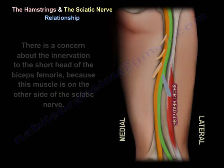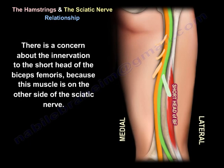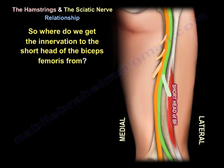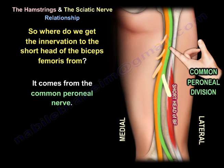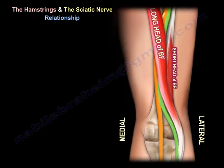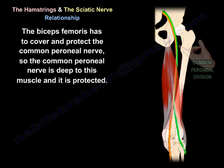There is concern about the innervation of the short head, because this muscle is on the other side of the sciatic nerve. The innervation comes from the common peroneal nerve, not from the tibial nerve, since the tibial nerve cannot reach there. The biceps femoris has to cover and protect the common peroneal nerve, which is deep to these muscles and therefore protected.